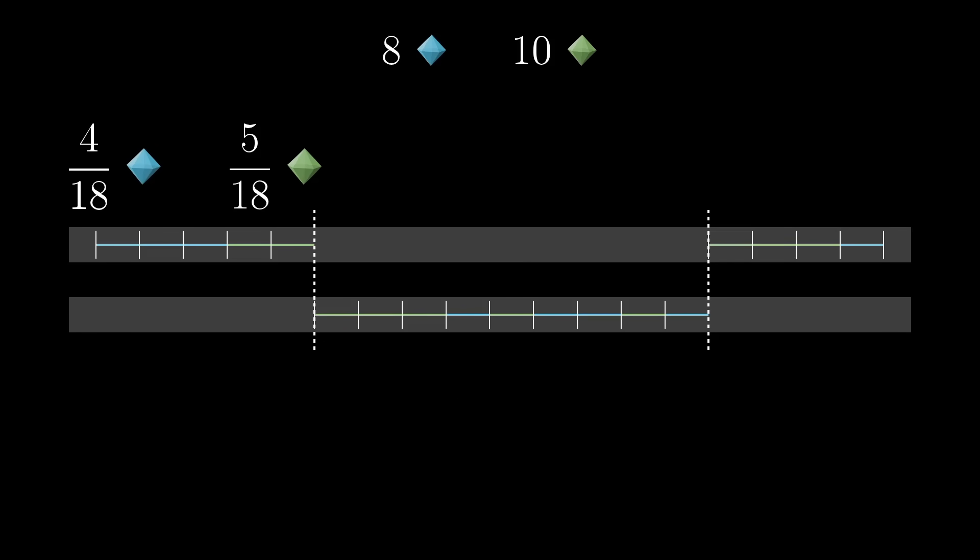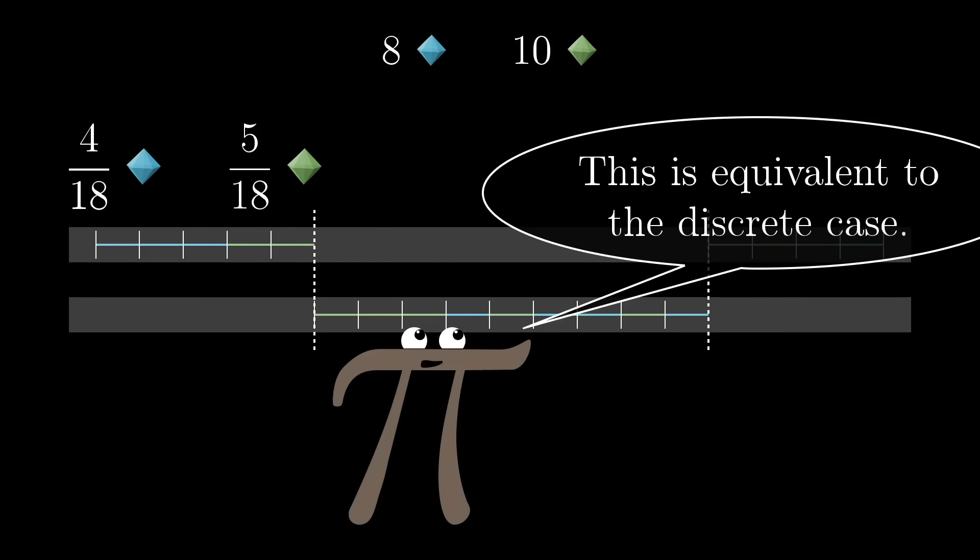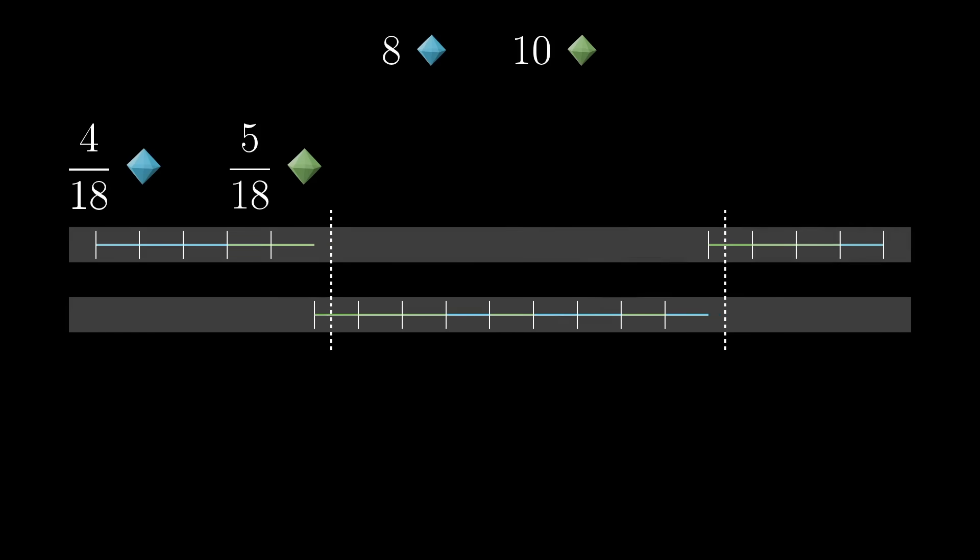An important, but somewhat subtle point here, is that if you can solve the continuous variant, you can also solve the original discrete version. To see this, let's say you did find a fair division whose cuts didn't happen to fall cleanly between the jewels. Maybe it cuts only part way through an emerald segment.